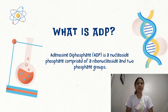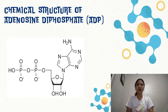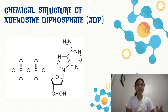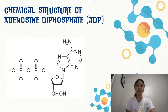What is ADP? Adenosine diphosphate or ADP is a nucleoside phosphate comprised of a ribonucleoside and two phosphate groups. This is the chemical structure of adenosine diphosphate. Based on the name itself, di, which means double, it has two phosphate groups. As you can see on the picture, this is the phosphate groups, this is the ribose, and this is the adenine.